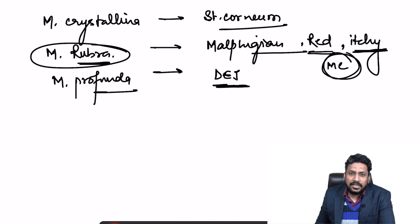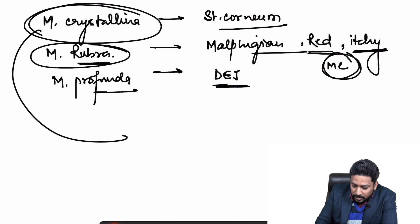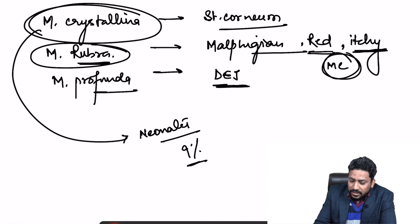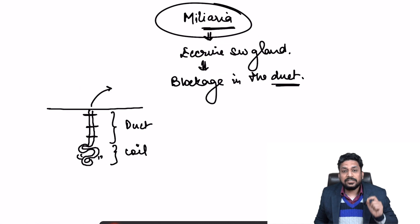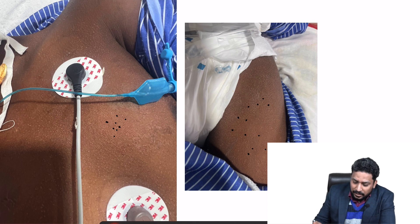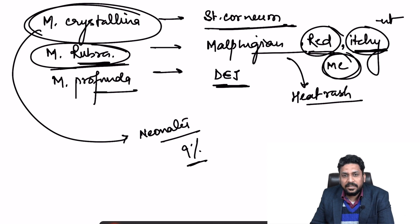Miliaria crystallina is generally seen in neonates, with an incidence of around 9%. In crystallina, the redness and itching are absent, and the lesions appear very similar to what is seen in this image — very tiny, clear, fluid-filled vesicular eruptions. Miliaria rubra, in contrast, appears red with inflammation. The lesions of miliaria rubra are also known as heat rash or prickly heat, and are associated with environmental factors like high heat or humid conditions.